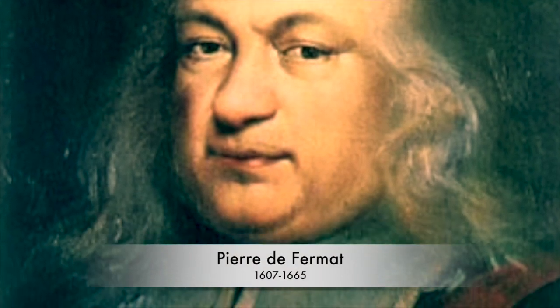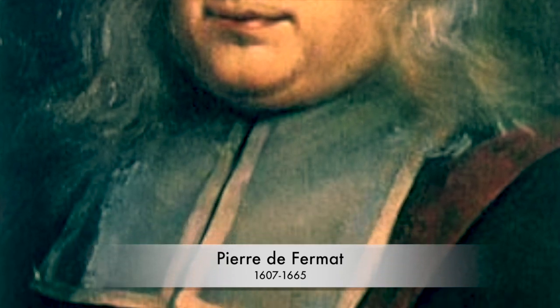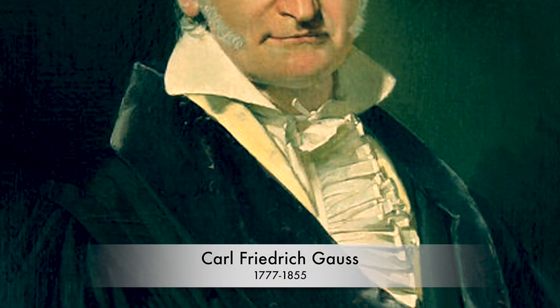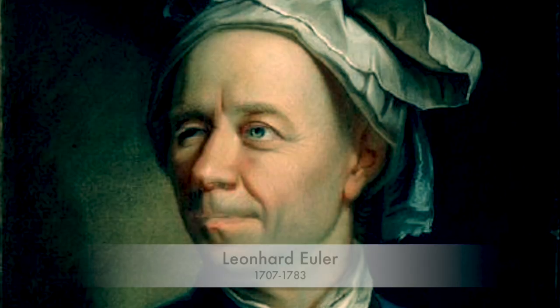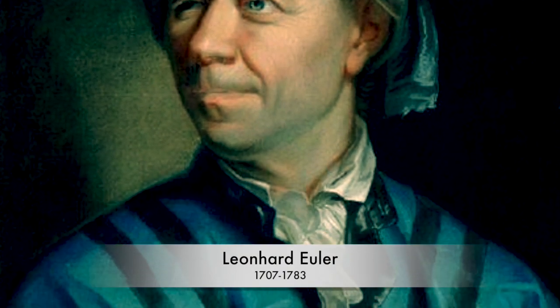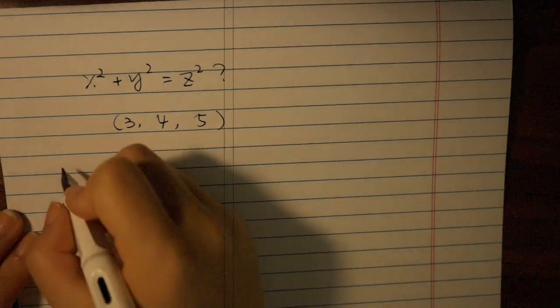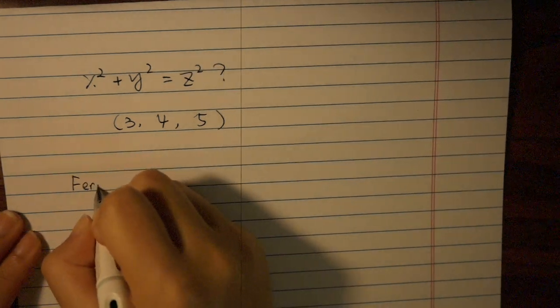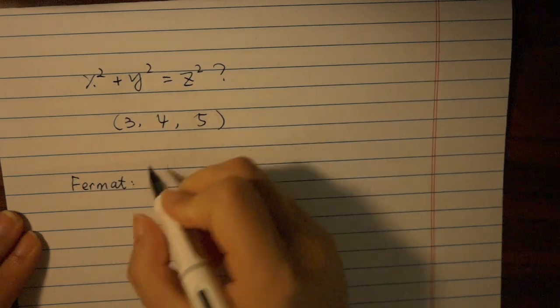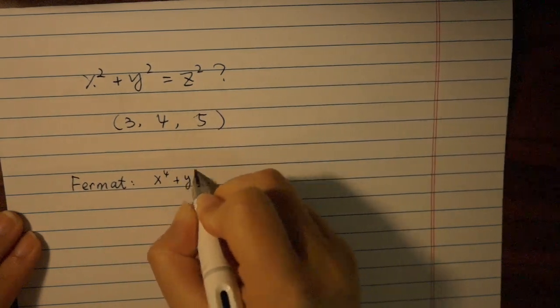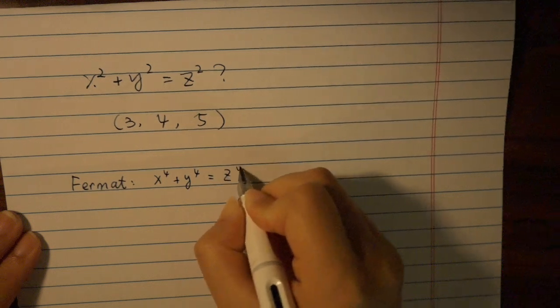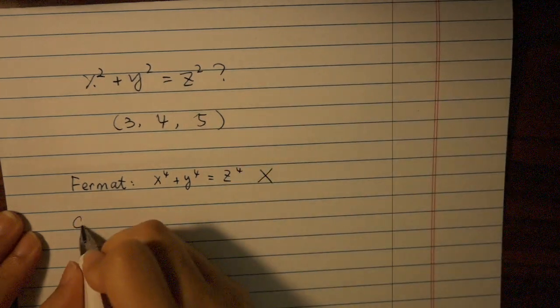So let's get into Fermat's last theorem. Large percent of Fermat's last theorem was not proved by Fermat. There have been so many contributions by mathematicians throughout the years. Fermat himself proved x to the fourth plus y to the fourth equals z to the fourth does not have a positive integer solution. And that's the proof we will focus on today.